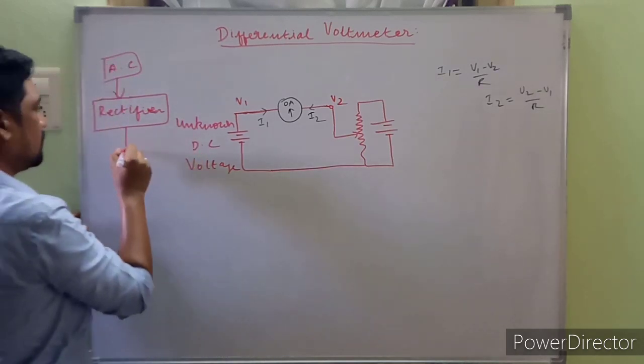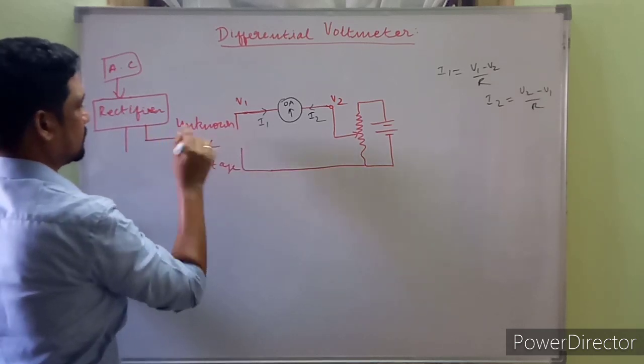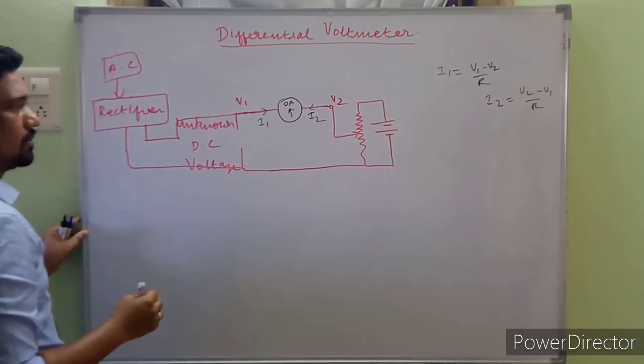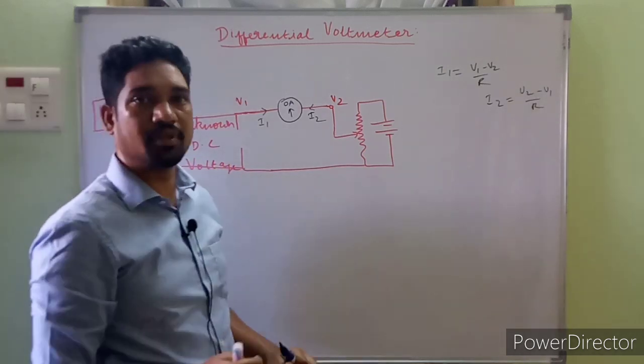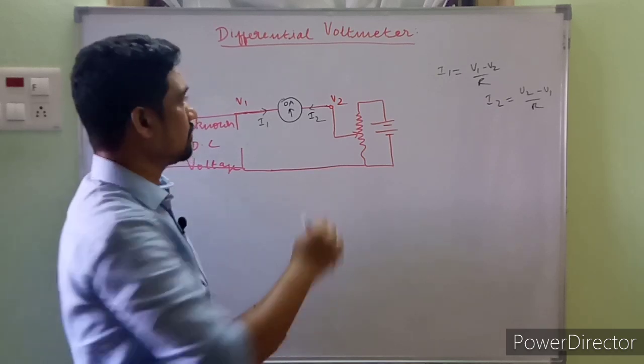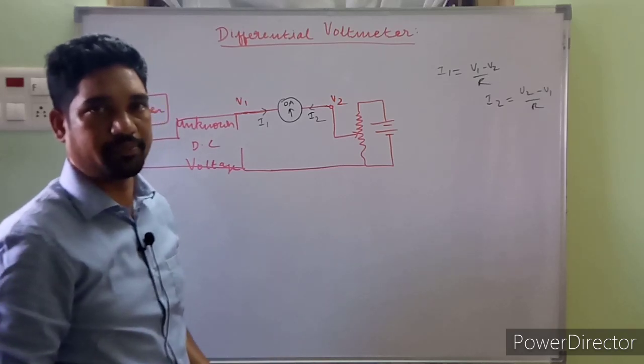Now we are ready to apply this. This DC from the rectifier is given as input to this circuit. So we can make use of measuring both DC voltage and AC voltage using a differential voltmeter. This is how we make use of a differential voltmeter.